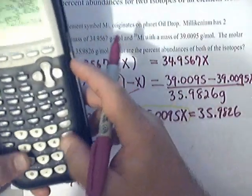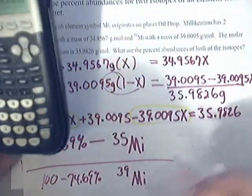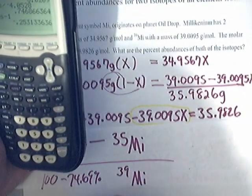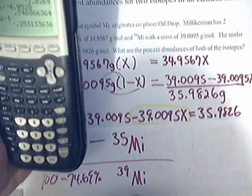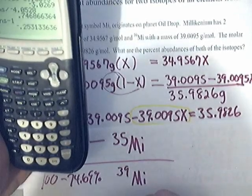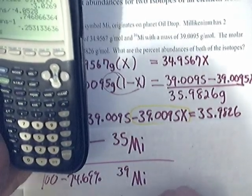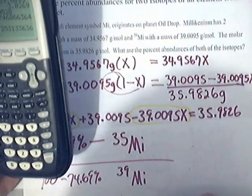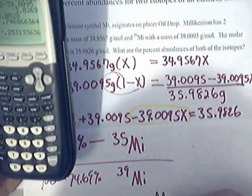So we do that. You end up getting 0.253133636 for the MI-39.